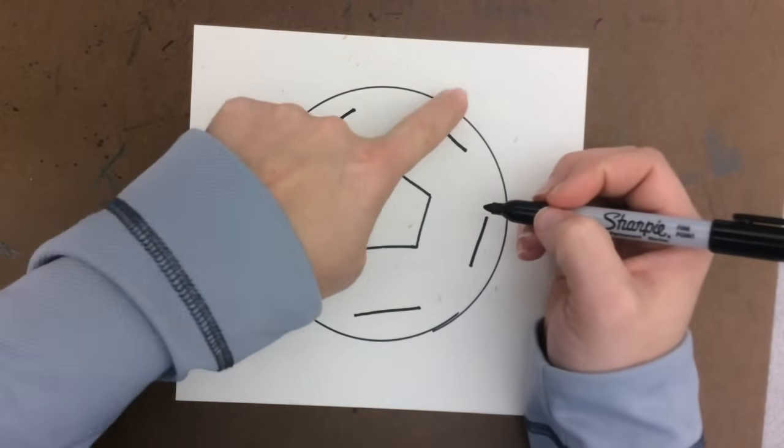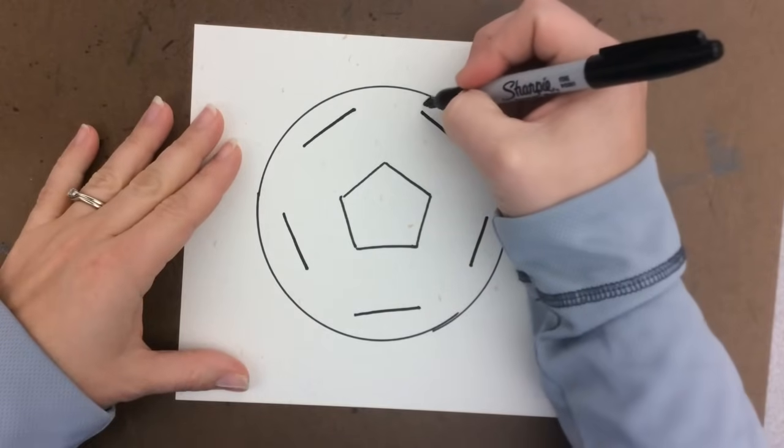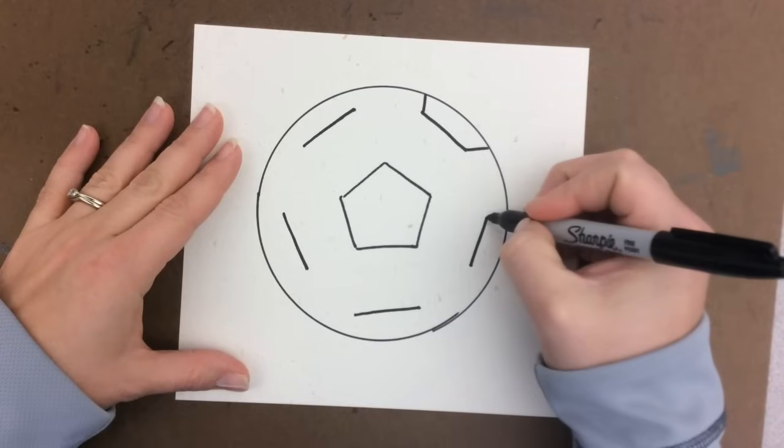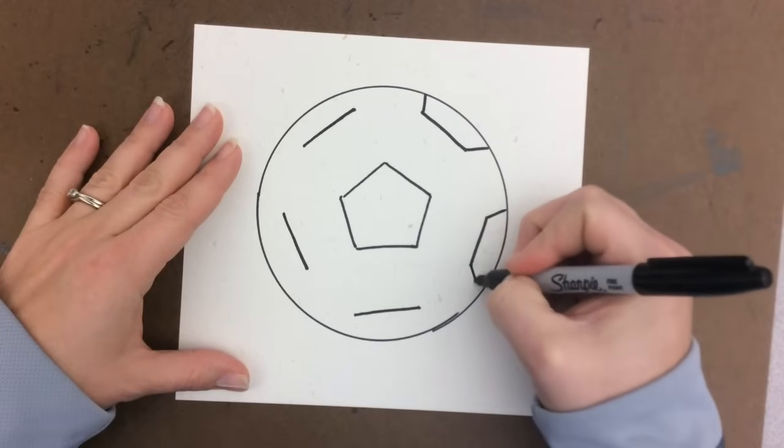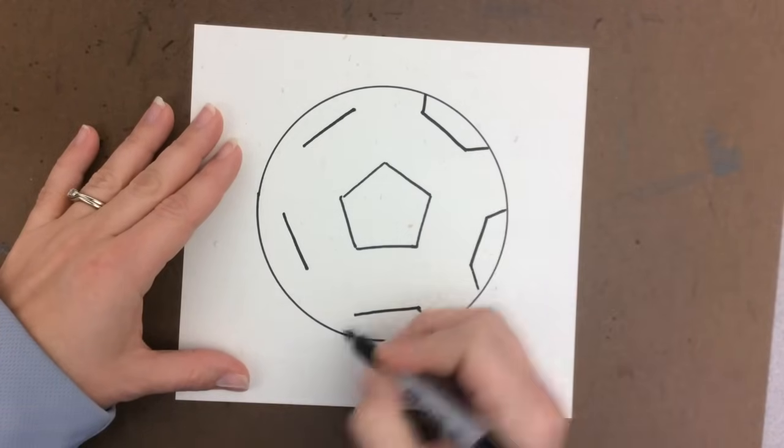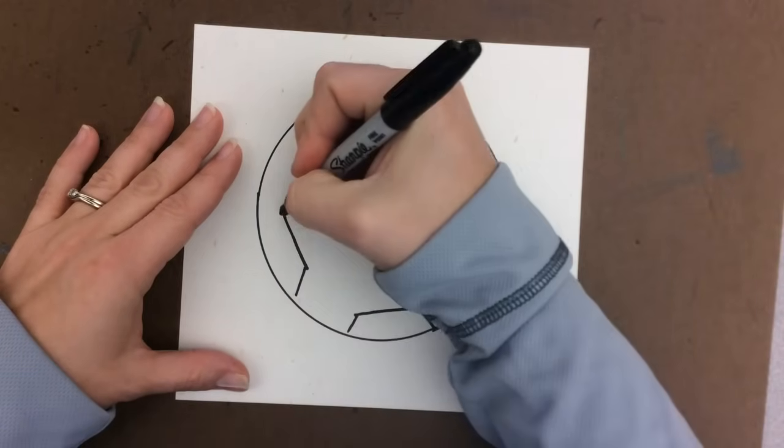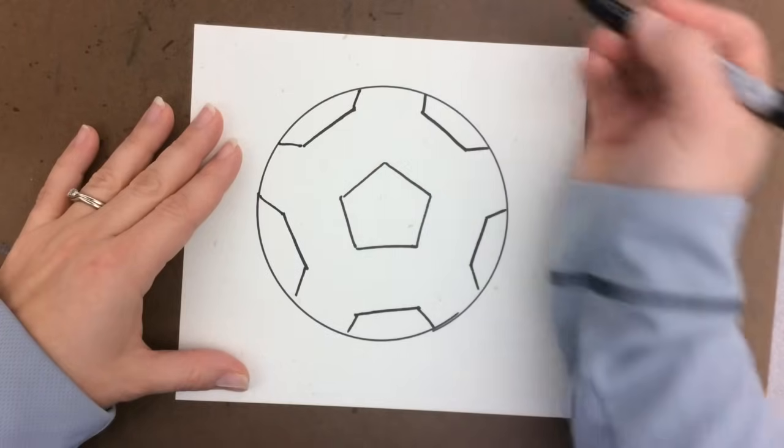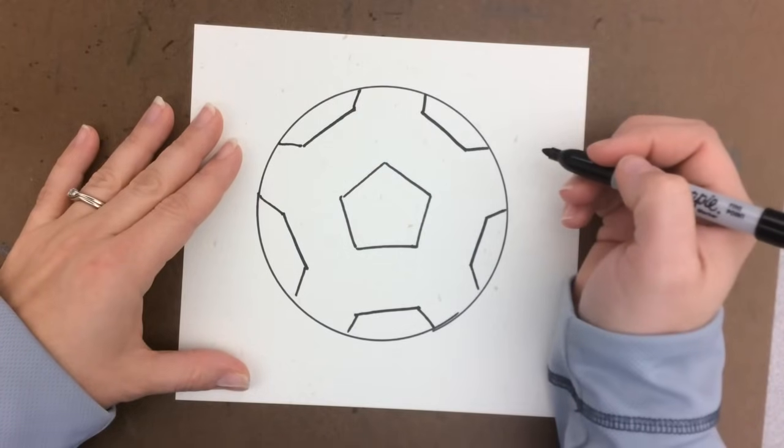Now we're going to bring these out to the edge of the ball. We're going to use diagonal lines for that, and the diagonal lines are going out away from the line. Good start to our ball.